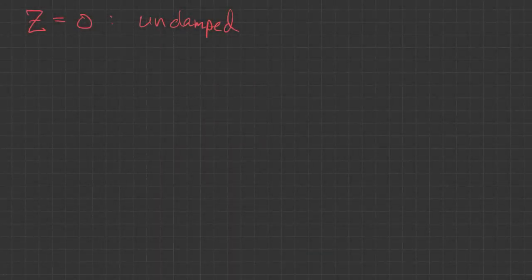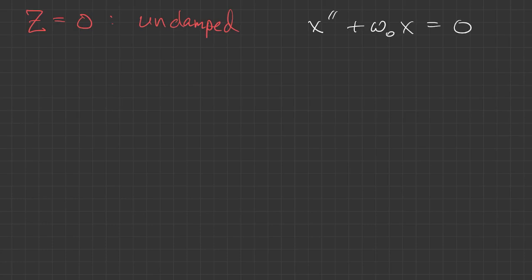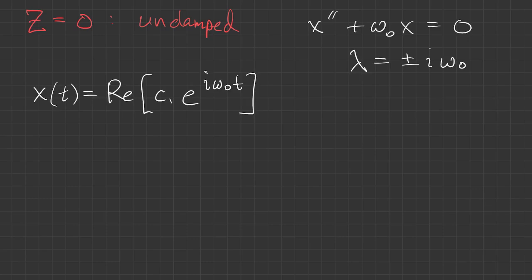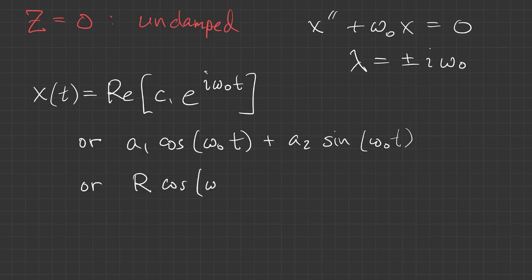First up, we have Z = 0, known as the undamped case. Here the eigenvalues are purely imaginary, so we get a solution that oscillates at frequency ω₀—that's why it's called the natural frequency. Without any damping, that's the frequency the system oscillates at. As usual, we have three different ways of writing it: complex form, cosine and sine form, or phase amplitude form. This type of solution is known as simple harmonic motion.